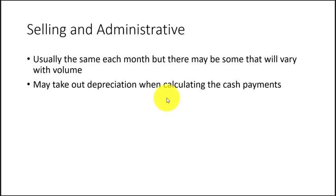Most selling and administrative costs are going to be fixed and the same every month, but there may be some that vary with volume — maybe commissions or other costs that go up and down with sales volume. We'll need to identify those items that are going to be paid in cash and separate out things like depreciation, which shows up on the income statement but isn't a cash payment, to make our cash flow work easier later.